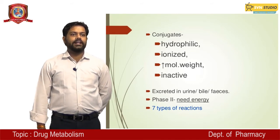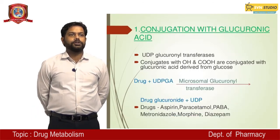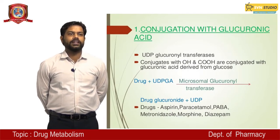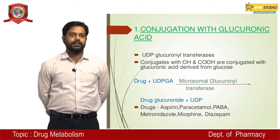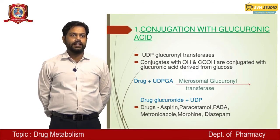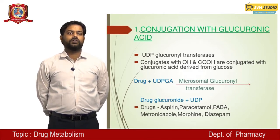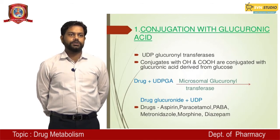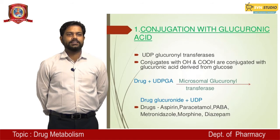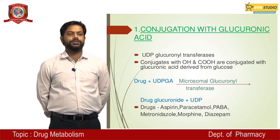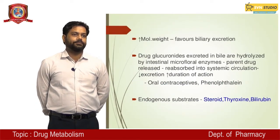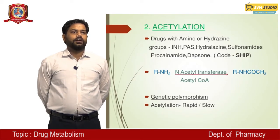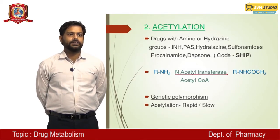Phase 2 reactions require energy. Glucuronide conjugation: drug reacts with glucuronic acid via UTP-glucuronosyltransferase. OH and carboxylic groups are conjugated with glucuronic acid derived from glucose. The reaction: drug plus UDPGA in the presence of microsomal glucuronosyltransferase gives drug glucuronide plus UDP. Examples of drugs: aspirin, paracetamol, PABA (para-aminobenzoic acid), diazepam, morphine, etc. Molecular weight increases.